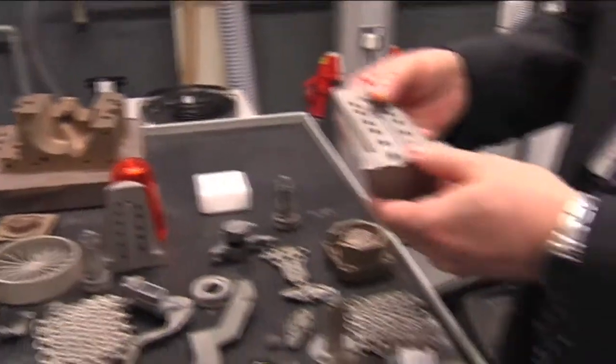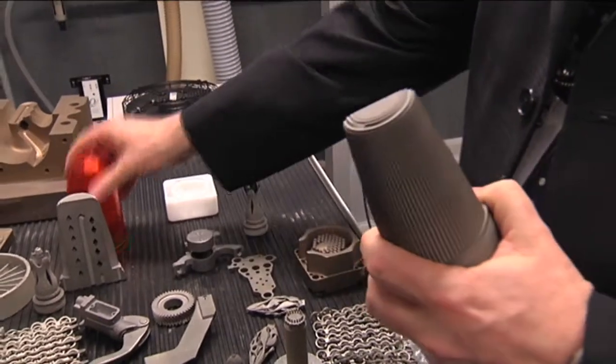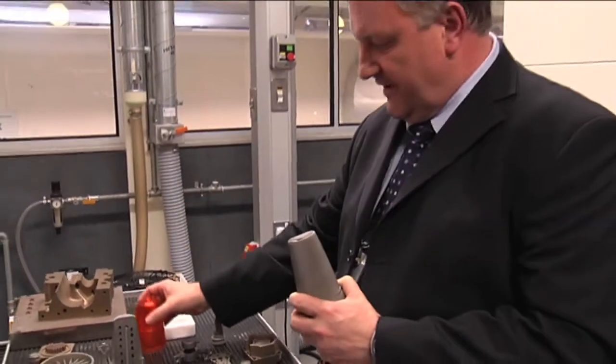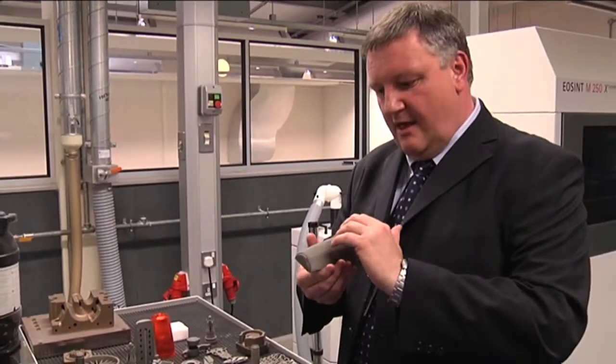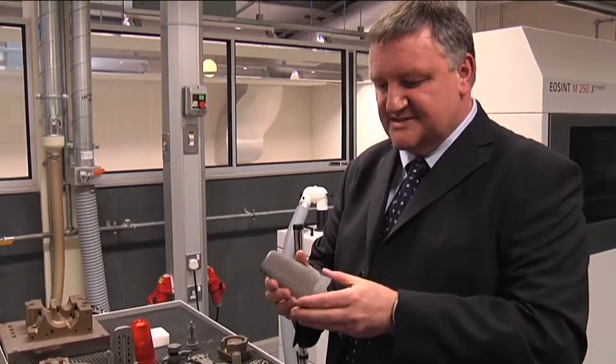This particular component here is a core to make this lens housing. This lens housing itself is faceted and making the facets using conventional moulding processes, tooling processes is very difficult.